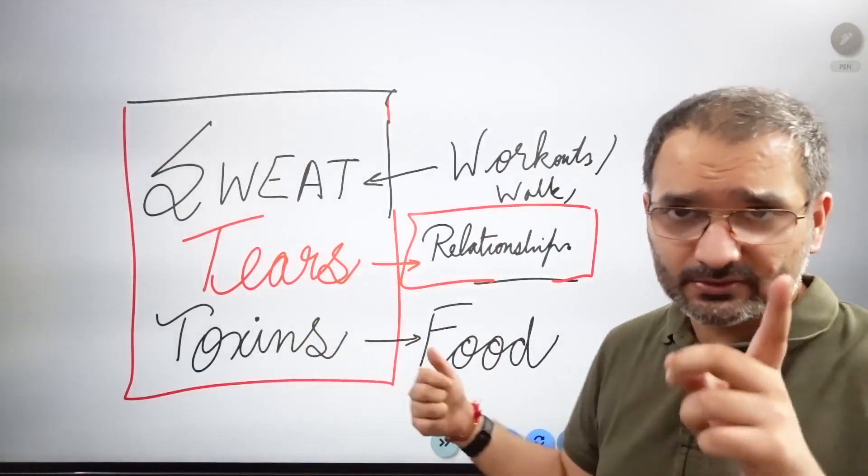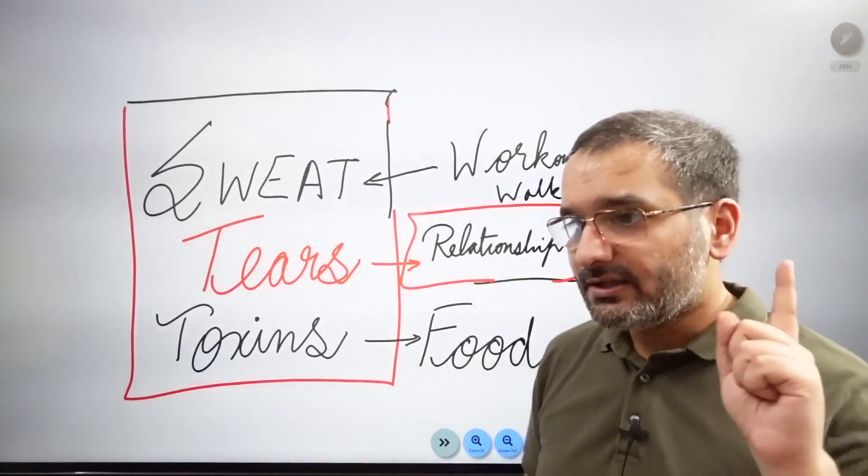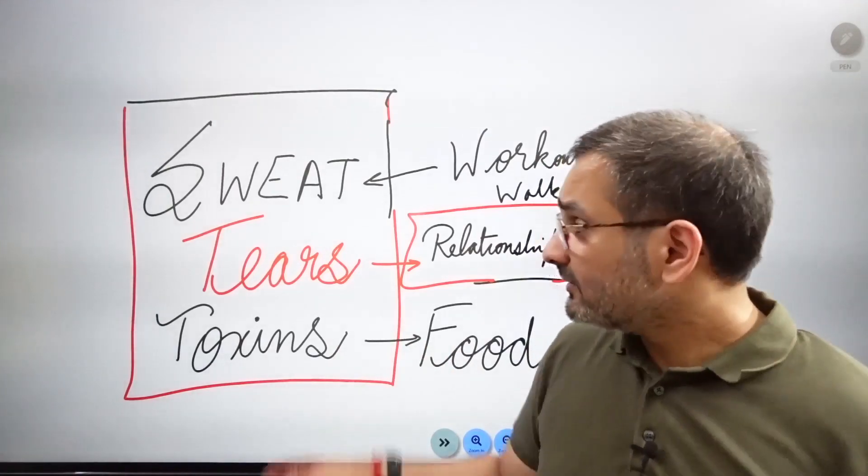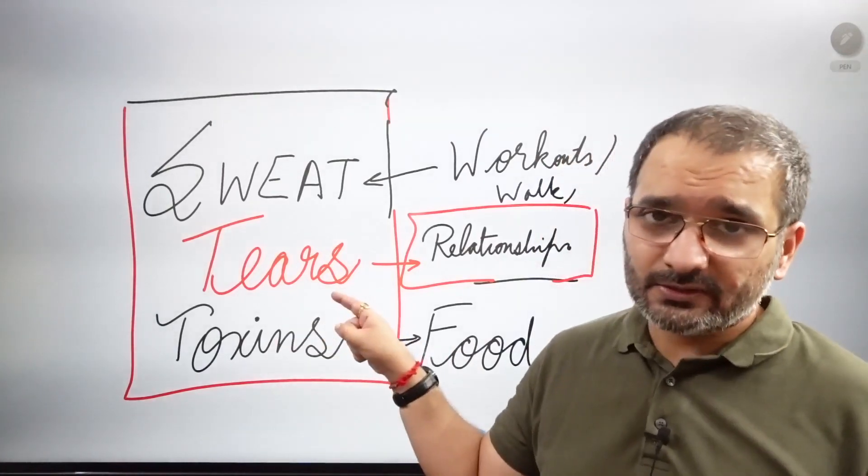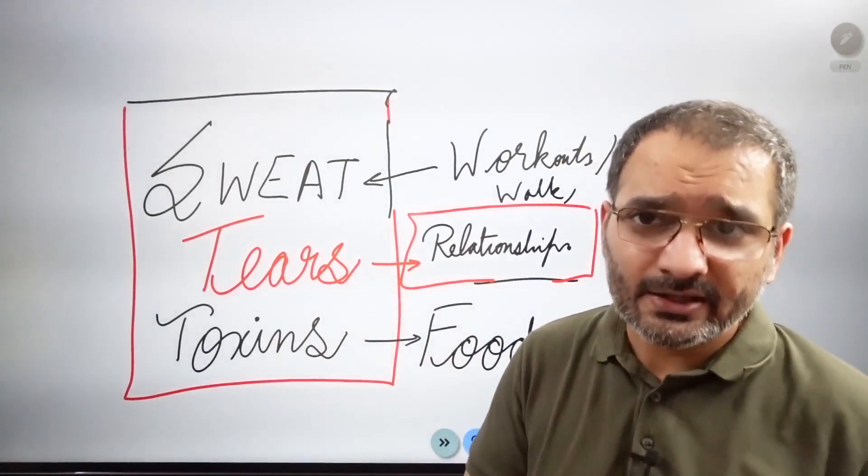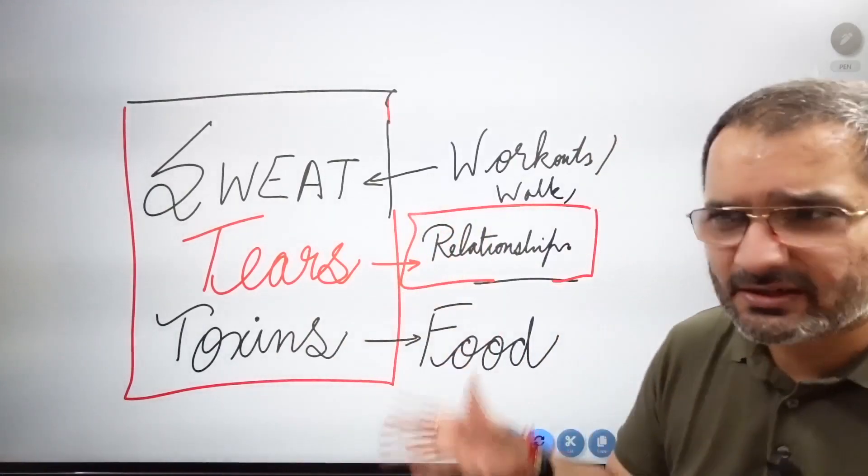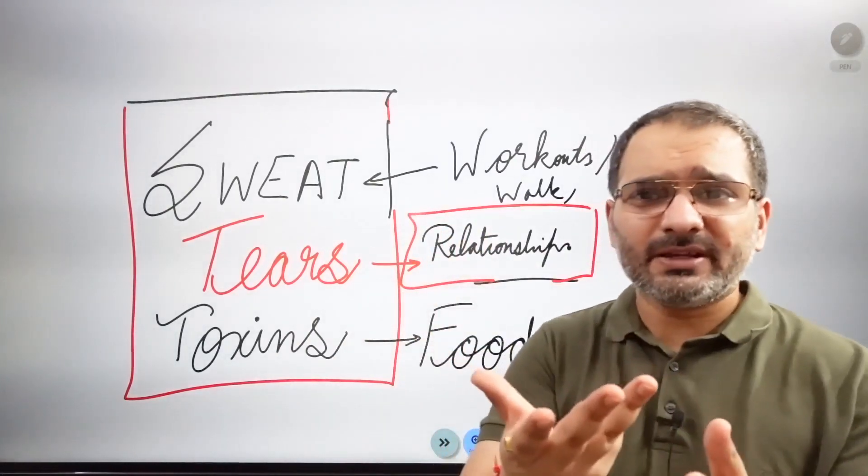Either you can scream it out - that's also a good technique, like in Titanic, I think Jack told Rose. Tears need to come out. Either you can talk to people. Basically, don't remain alone and isolated, otherwise there's not much else to do in this world.